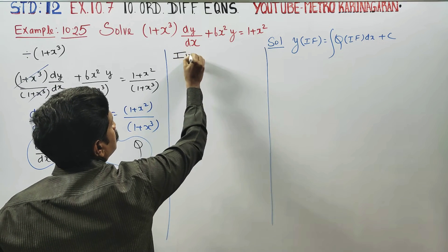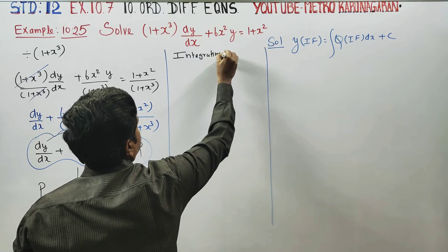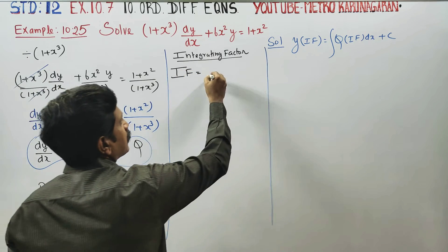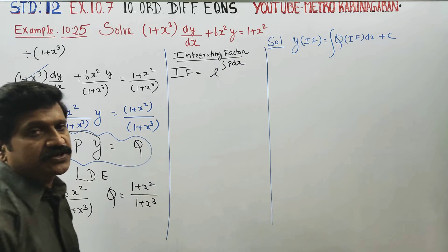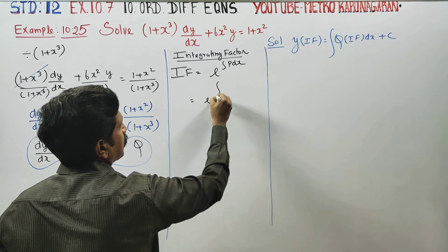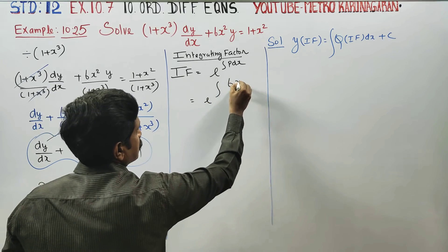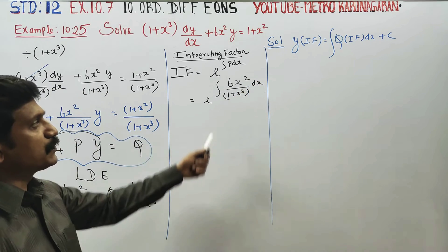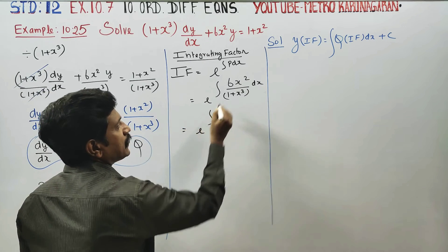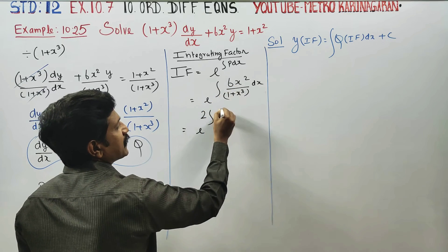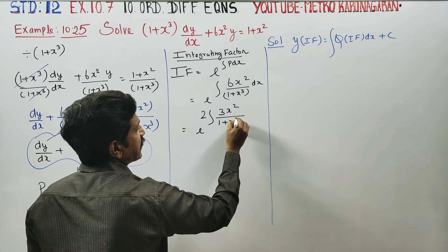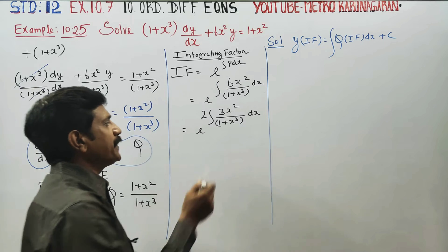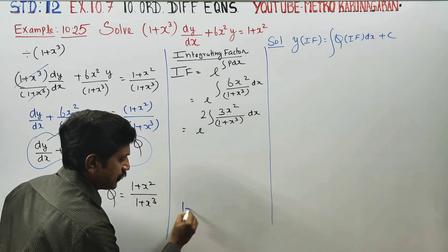Now entering into the integrating factor. The integrating factor, short form IF, is equal to e power integral of P dx. So IF equals e power integration of 6x square by 1 plus x cube dx.